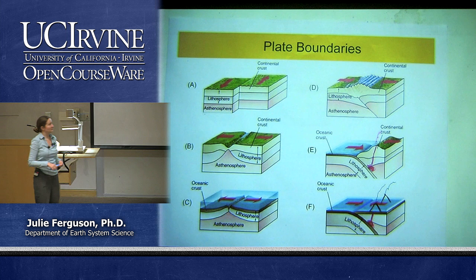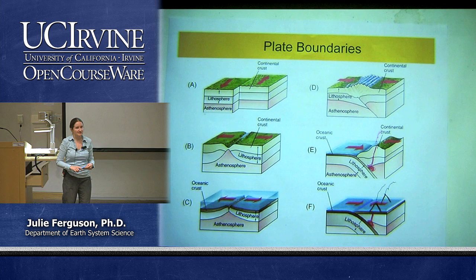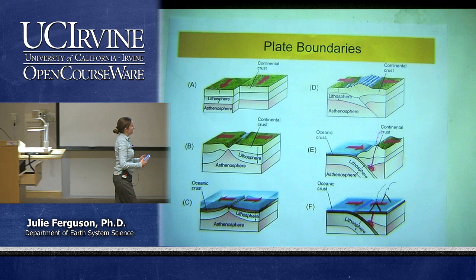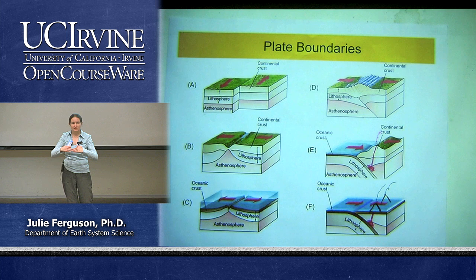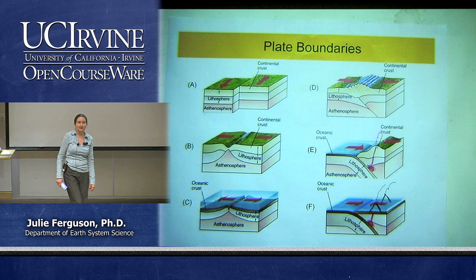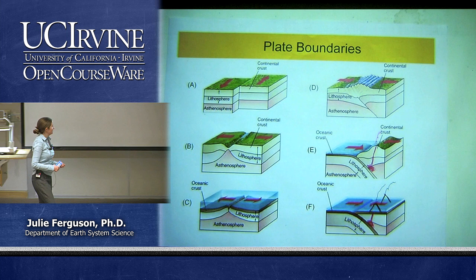Boundary E is convergent with both oceanic and continental crust. Landscape features include a line of mountains and volcanoes running along the edge of the continent, and in front of them an ocean trench — a very deep area of ocean where the two plates meet and one begins sliding underneath the other. Where we see an ocean trench next to a line of volcanoes, that's a clear sign of this type of convergent boundary.